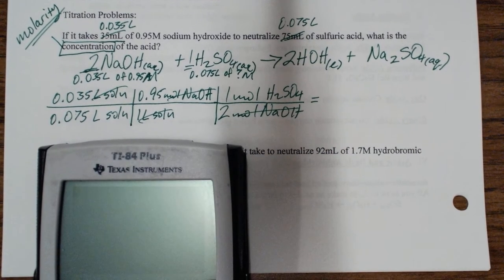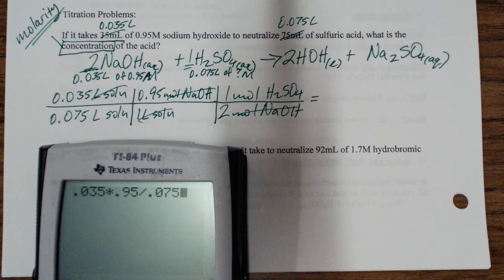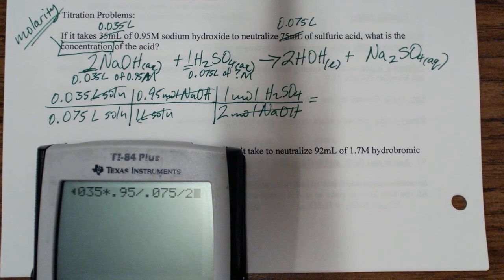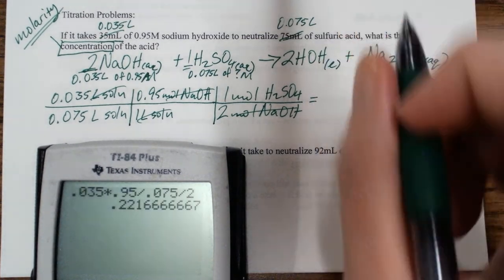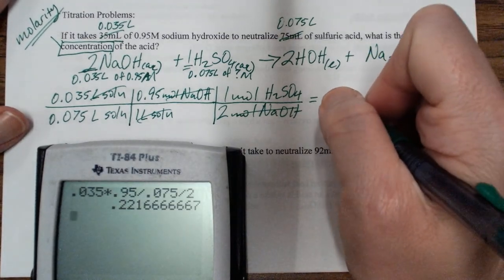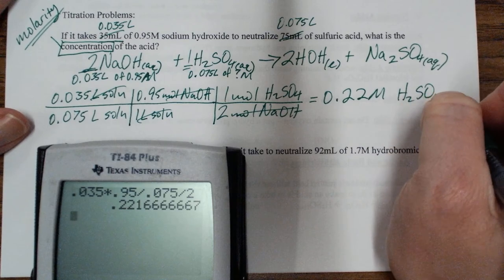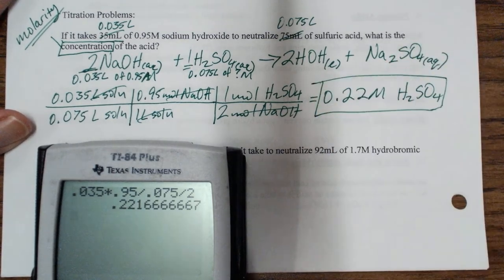So 0.035 times 0.95 divided by 0.075 divided by 2. And so in all my numbers that I was using, they're all two sig figs, so my answer should be two sig figs. So it's 0.22 molar H2SO4.